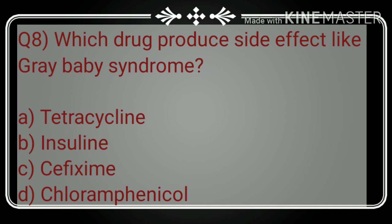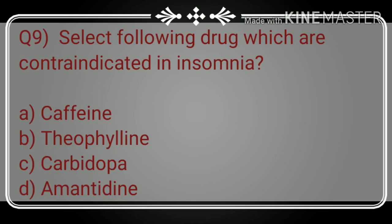The correct answer for question eight is option D, chloramphenicol. Chloramphenicol produces the side effect of gray baby syndrome after the administration of this drug.